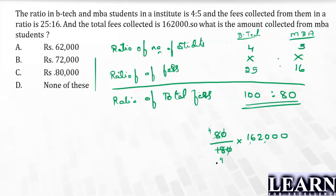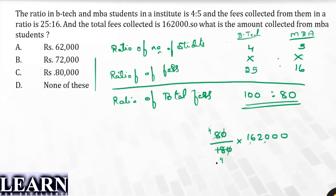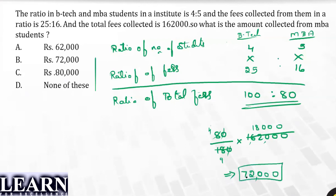Check if it's divisible by 9: 162 divided by 9 is 18. So it is 18 times. Then 4 times 18 is 72. It becomes 72,000 as the total amount collected from the MBA department. So the answer is option B.